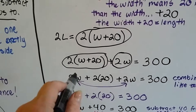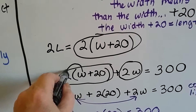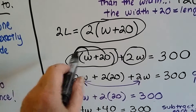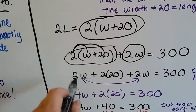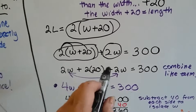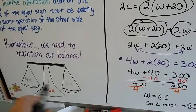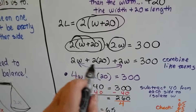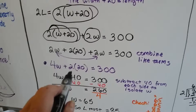Now we need to combine like terms, so we apply the distributive property: 2 times (W + 20) becomes 2W plus 2 times 20. So the equation is 2W + 40 + 2W = 300. Combining the like terms: 2W and 2W makes 4W, and 2 times 20 is 40. So we're down to 4W + 40 = 300.